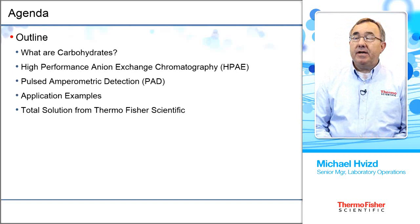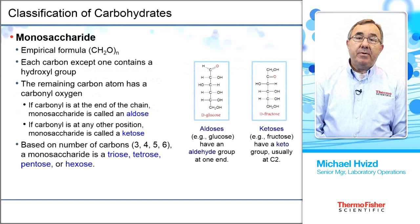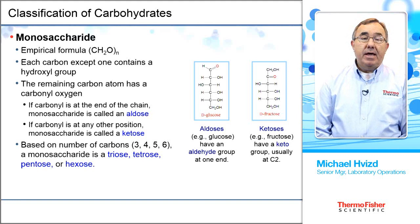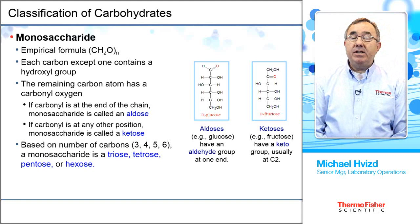We'll start with classification of carbohydrates. The monosaccharides we analyze for typically are sugars that have either three, four, five, or six carbons. If the carbonyl group is at the end of the chain, that's called an aldose. If the carbonyl group is at any other position, then that monosaccharide is classified as a ketose. Here we have a diagram of the aldoses and ketoses.